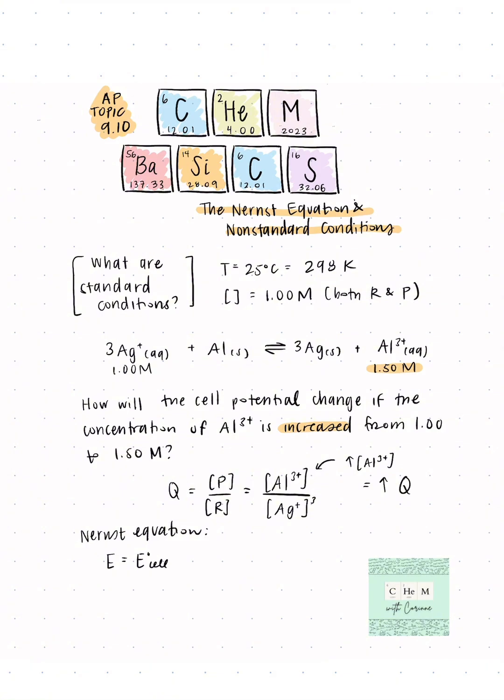And you're like, okay great, but that still doesn't give me my answer. This is where the Nernst equation comes into play. For AP Chem, you won't have to actually do a calculation with this, but seeing that Q increases means our cell potential will decrease.